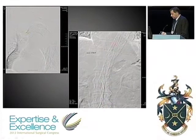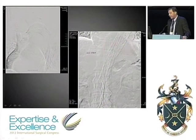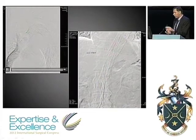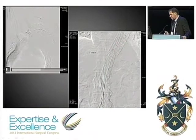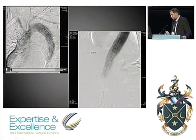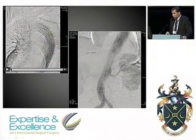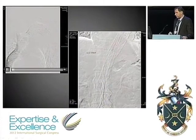This shows the final angiogram of the arch case with the fenestrated graft working well, and the distal control showing the visceral arteries — the renals, celiac, and SMA — coming up nicely. The entire aneurysm was completely excluded using two types of fenestrated and branch grafts.